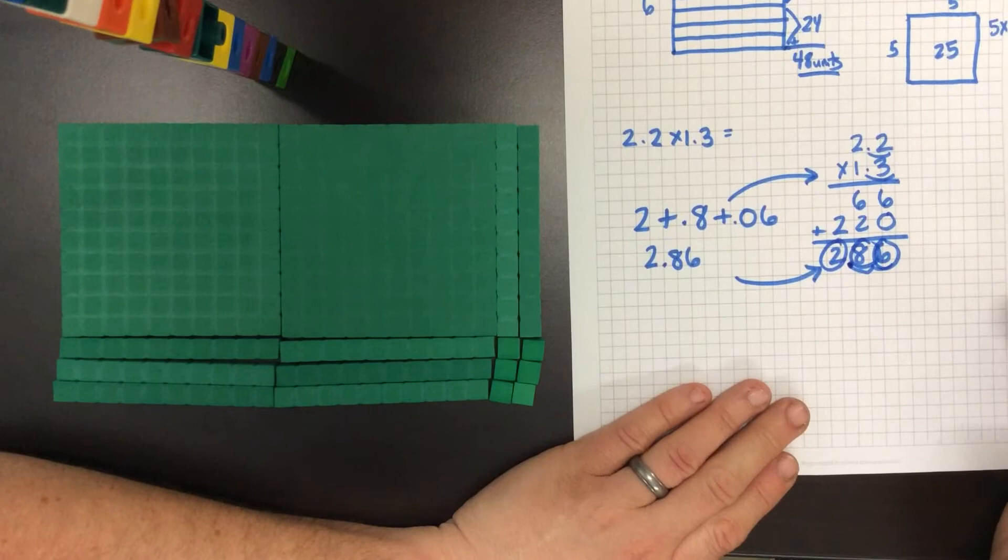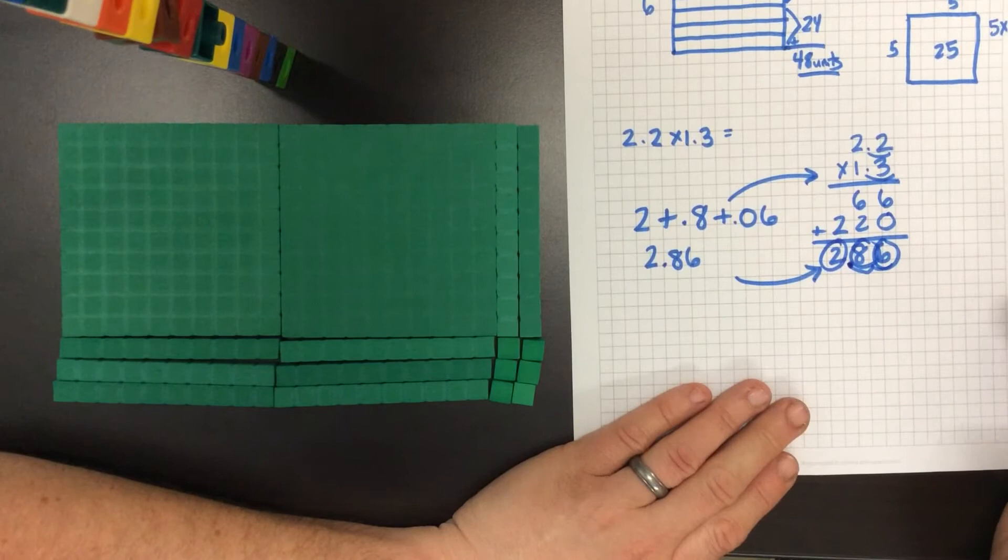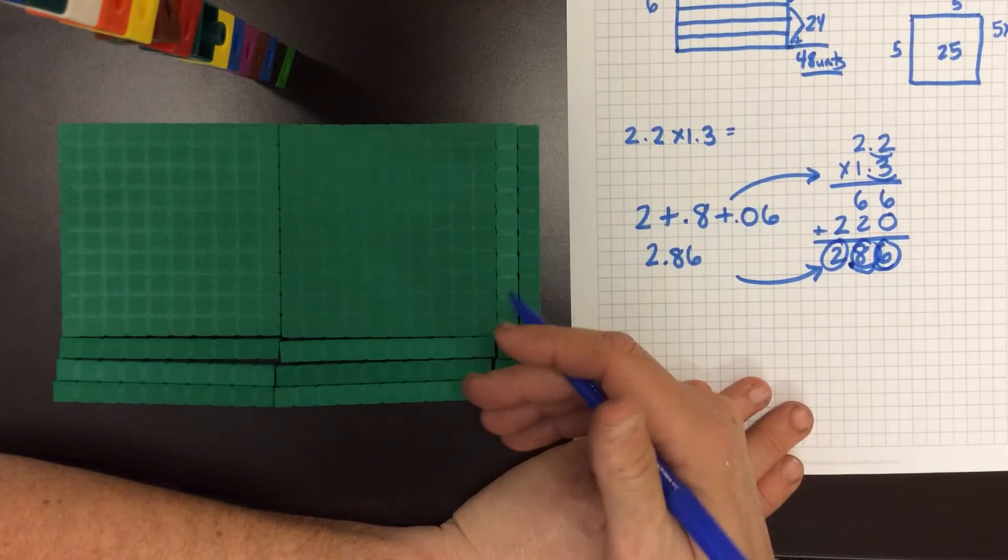Eventually we're going to transition students over to the algorithm when it is appropriate for students. That being our end goal. But what our goal is for right now is for kids to be able to visually see it and then once they've created the model, draw the model out on paper for us to be able to show it another way. Thanks for watching. Have a great day.